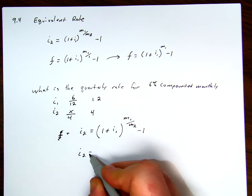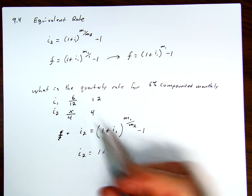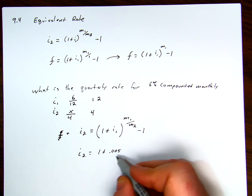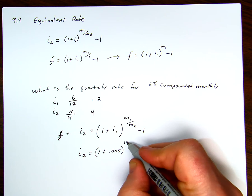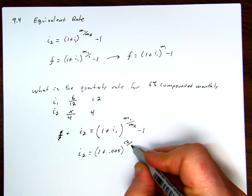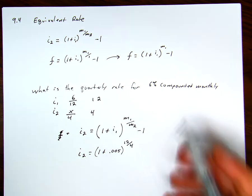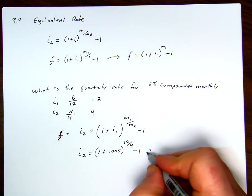So the new rate is equal to 1 plus, in this example, this would be 0.005, because remember this is a decimal, to the 12 over 4, because we're converting monthly into quarterly, minus 1. And we get a value.